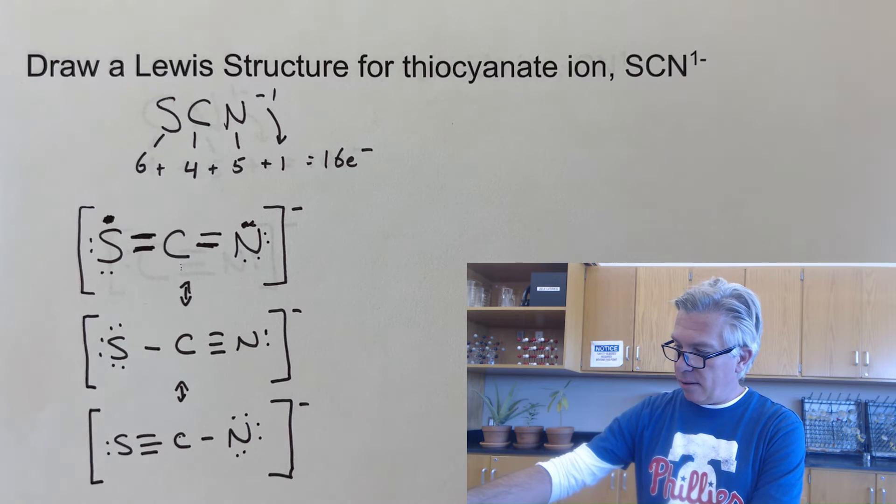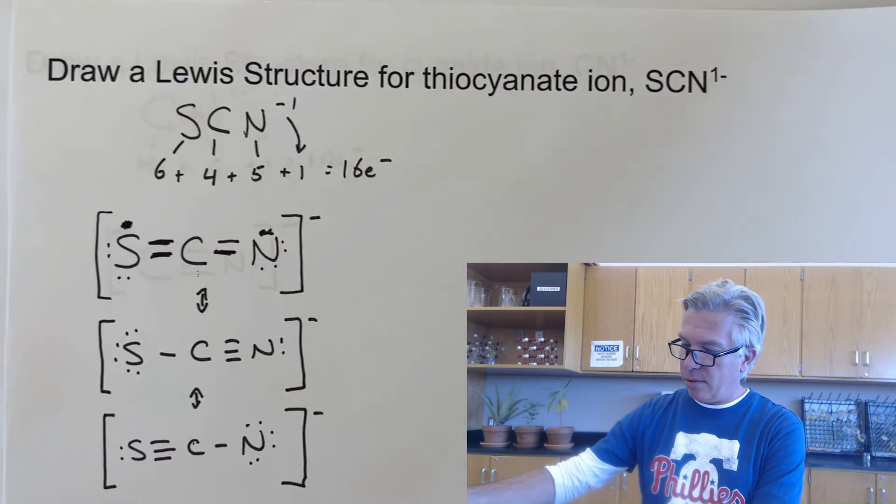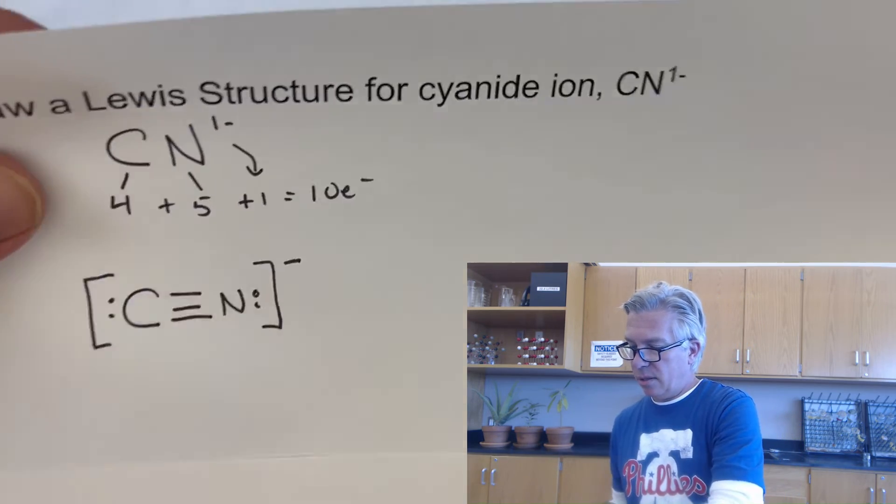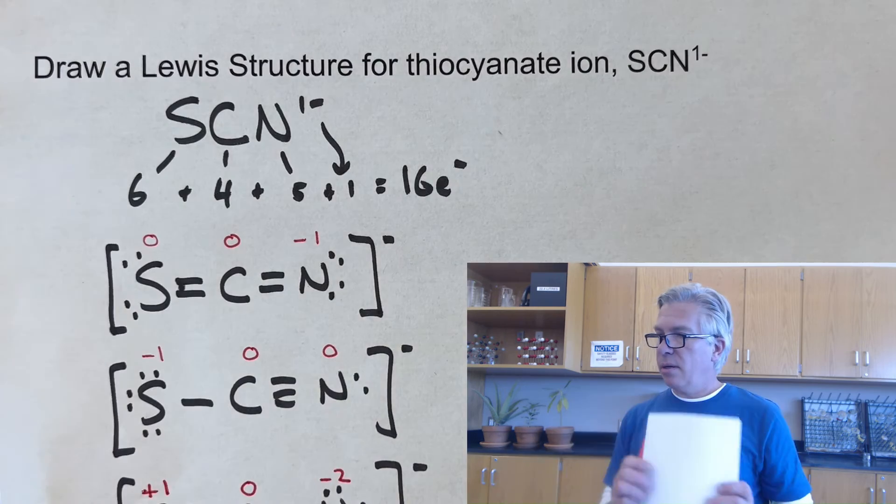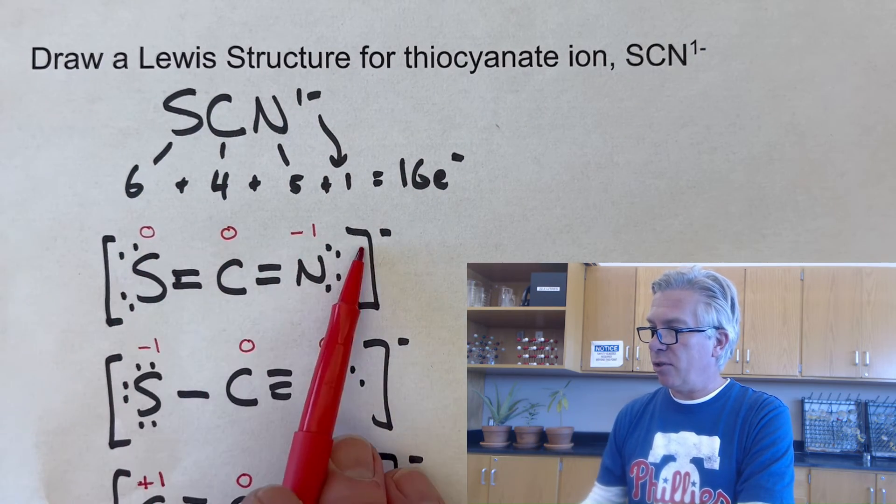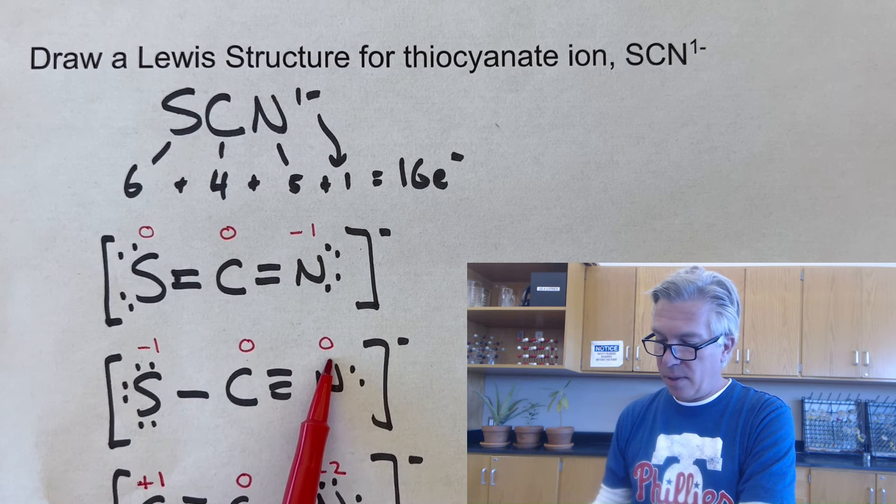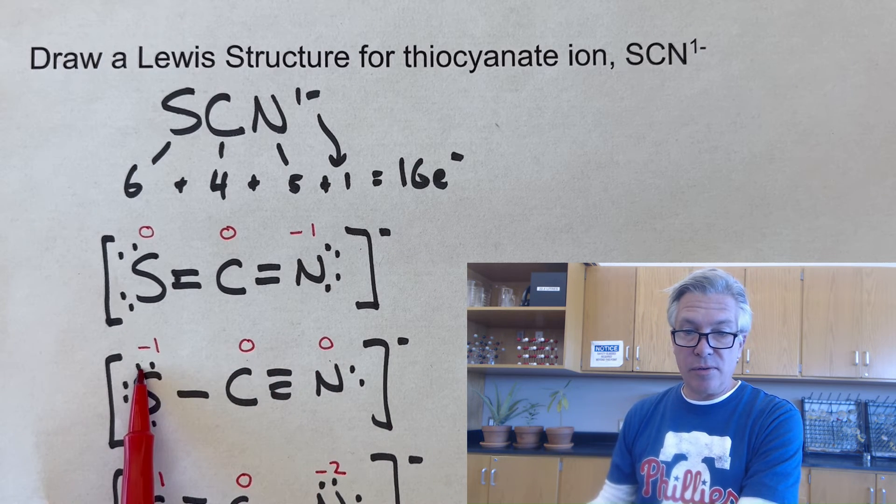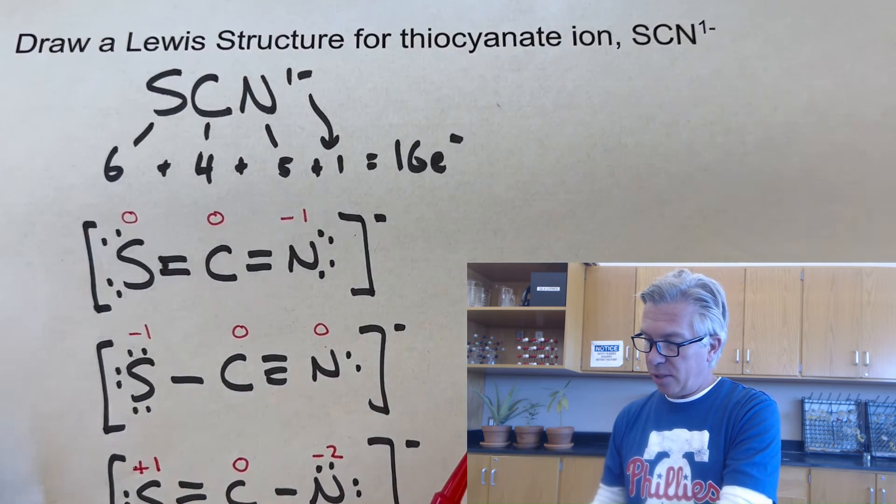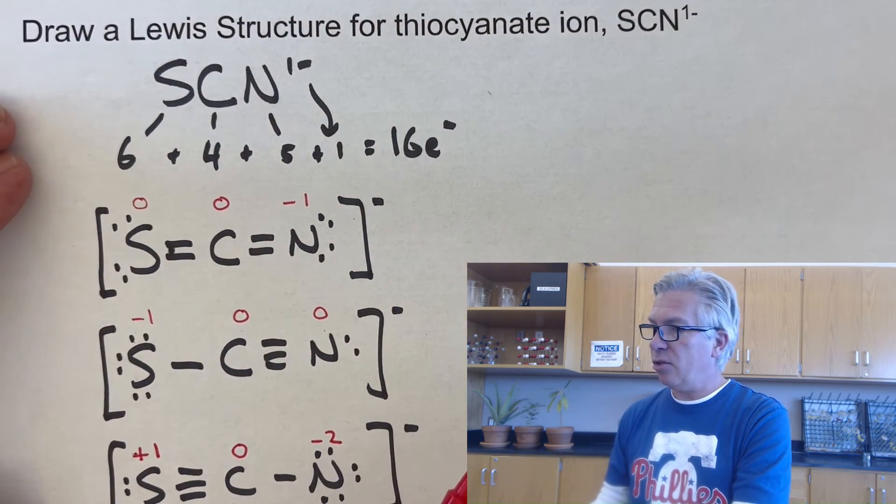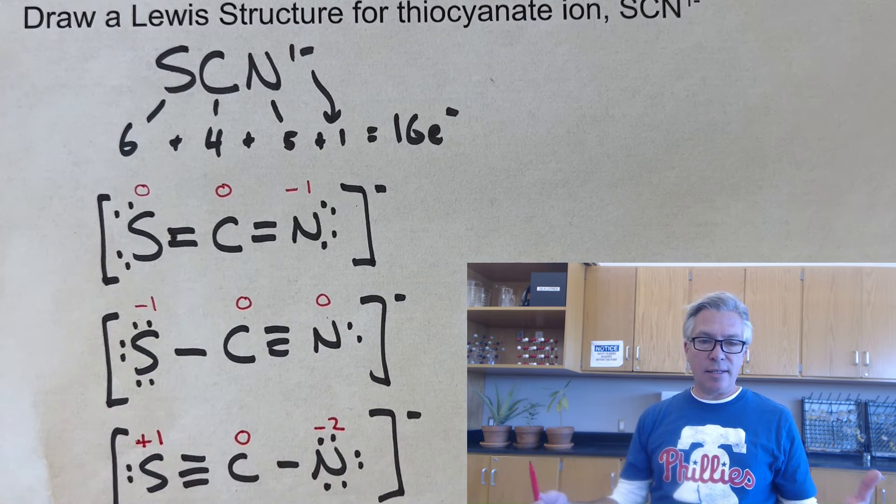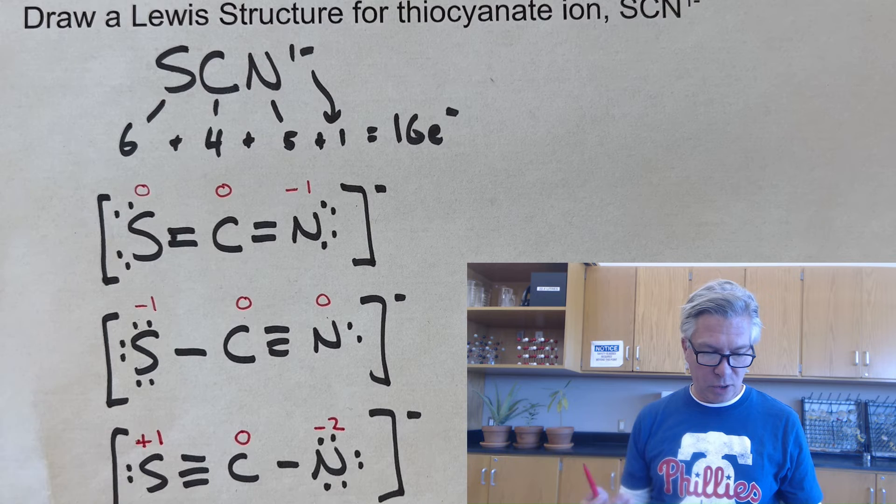Okay, so if you finished assigning your formal charges, and if you got a formal charge such as these, we already did the zero, zero, minus one version. This one is minus one, zero, and zero. The negative charges get swapped over to the sulfur because it had more electrons. And in the final one, we have plus one, zero, and minus two as our formal charges there. So how does this help us to decide which one is actually best?